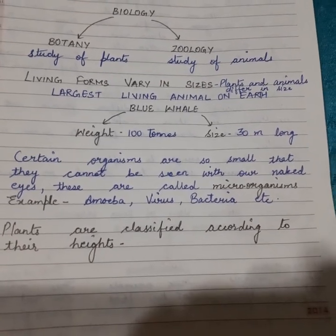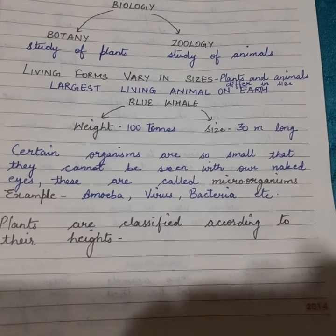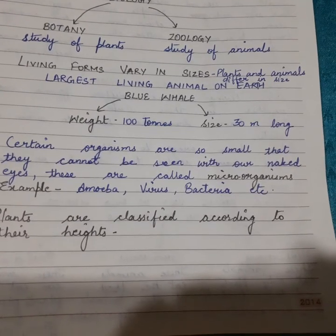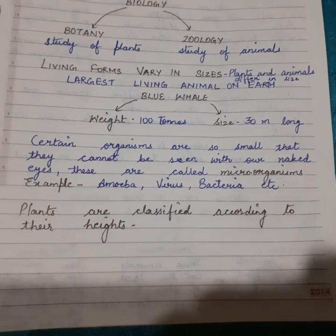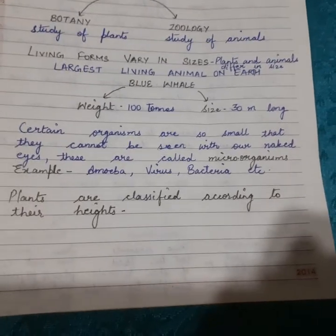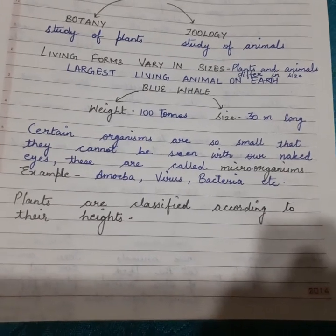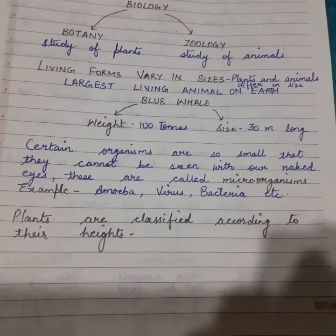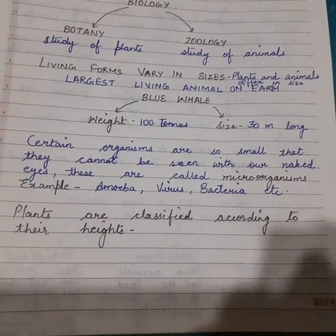Living forms vary in sizes. Plants and animals differ in sizes — some are small, some are big. For example, the largest living animal on earth is the blue whale, which weighs 100 tons and its size is 30 meters long.